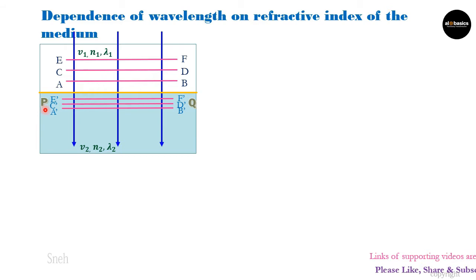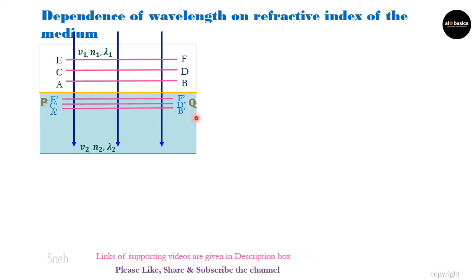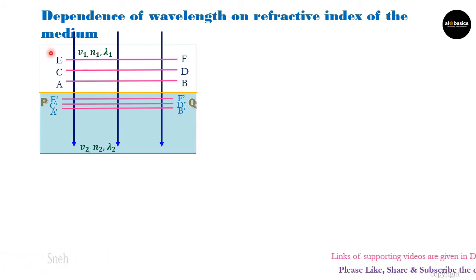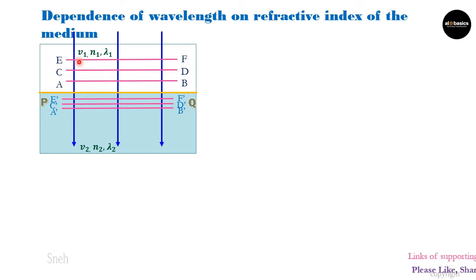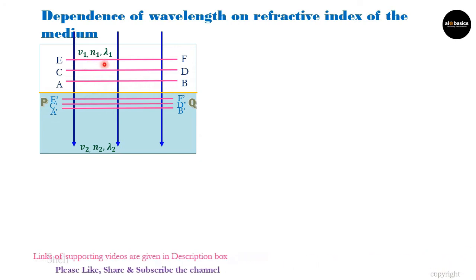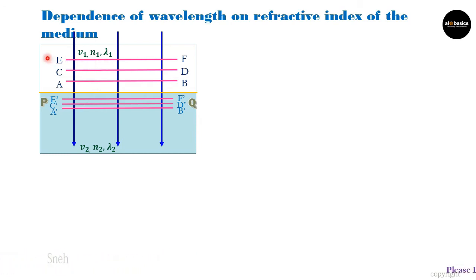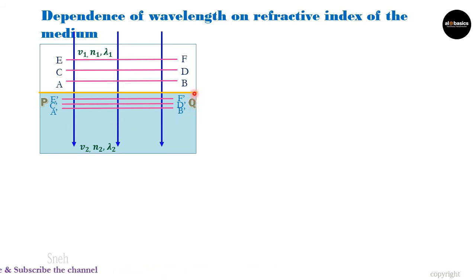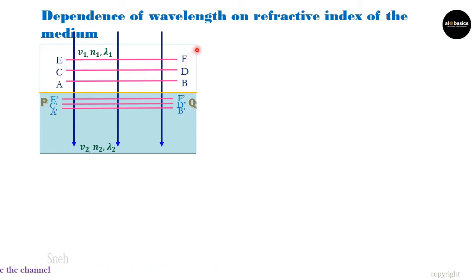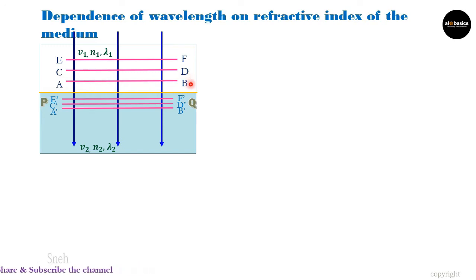For that, we will consider two media separated by surface PQ, which is a plane boundary between the two media. The first medium is a rarer medium and the second is a denser medium. These two media have speed of light, refractive index, and wavelength as v1, n1, and lambda1 for the first medium and v2, n2, and lambda2 for the second. The rays of light are perpendicular to surface PQ — this is normal incidence — and the wavefronts are traveling from the rarer medium to the denser medium.